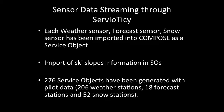To perform this integration with Servioticy, we have imported every weather sensor, forecast sensor, and snow sensor inside the Compose platform as a service object. In addition, information about ski slopes like location and geometry have been imported as well. In total, we have created 206 weather stations, 18 forecast stations, and 52 snow stations as service objects that are continuously updated with sensor information in real-time.